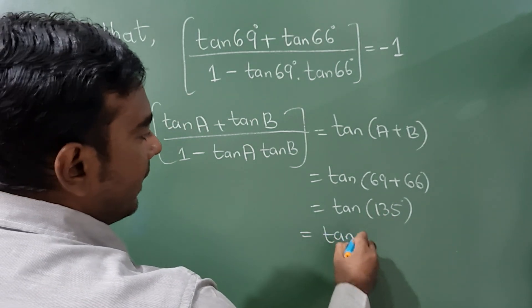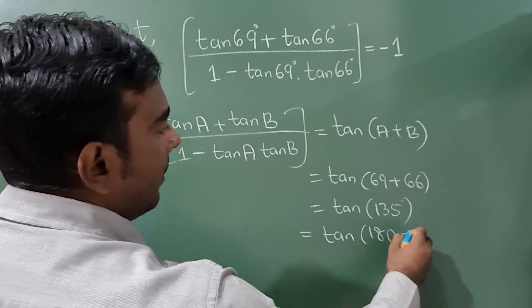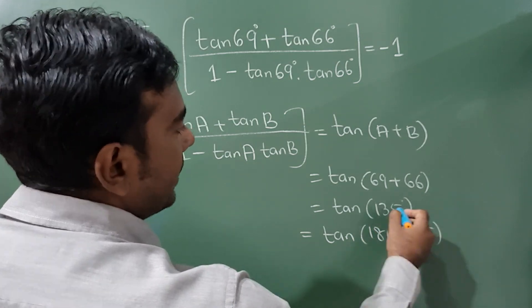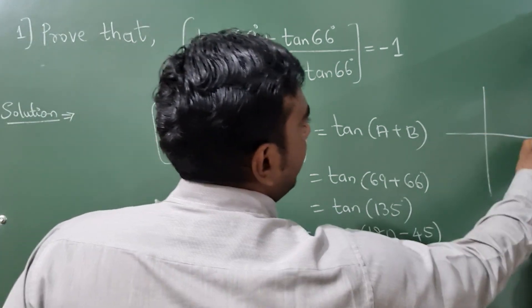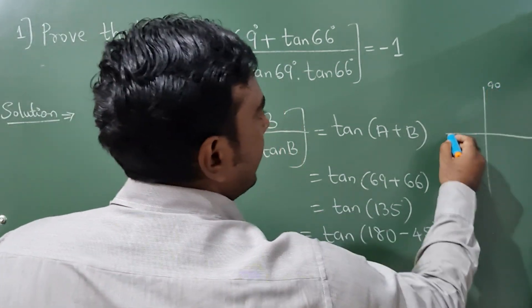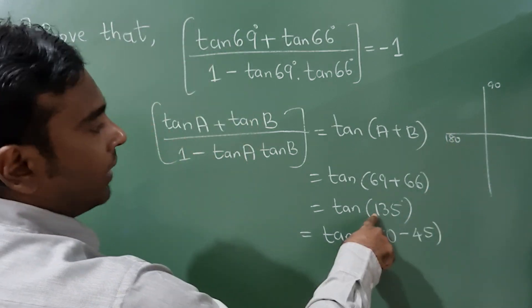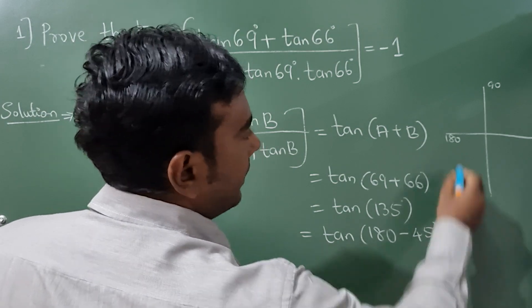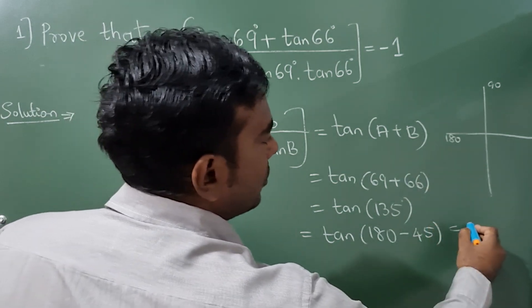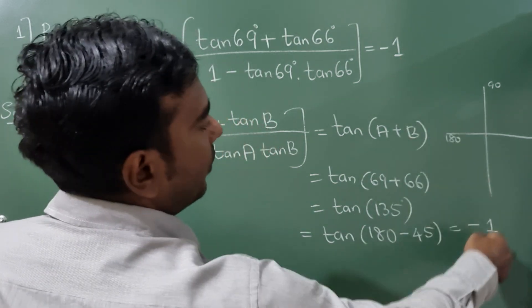Tan 180° minus 45° is 135°. Drawing the quadrants: 0°, 90°, 180°. 135° comes here in the second quadrant. In the second quadrant, tan is negative, so the answer is minus 1.